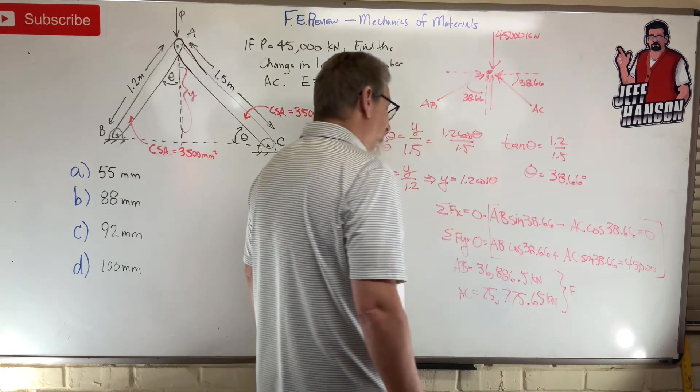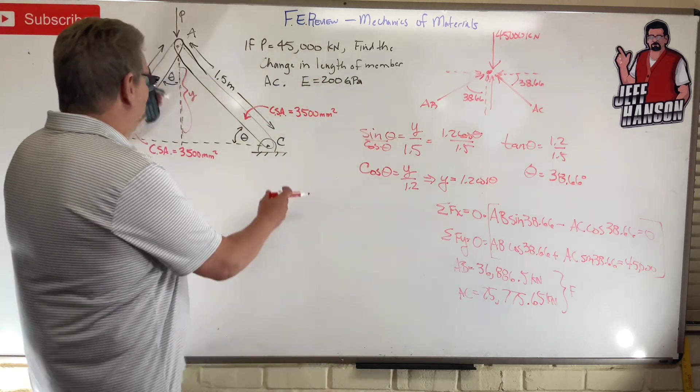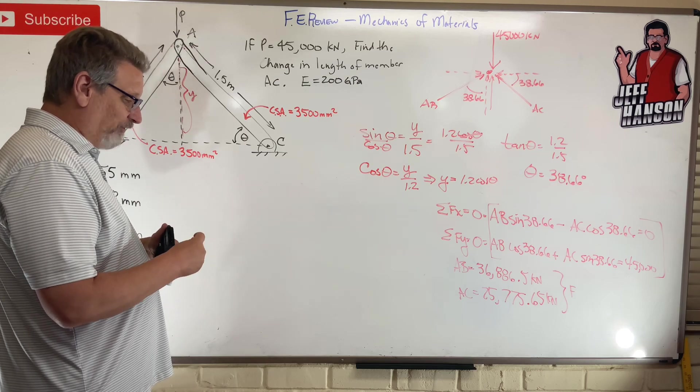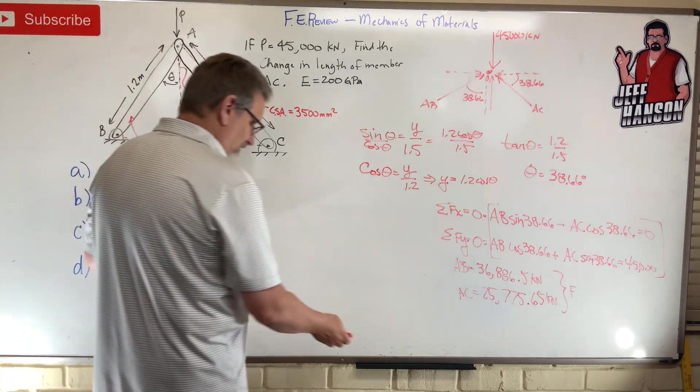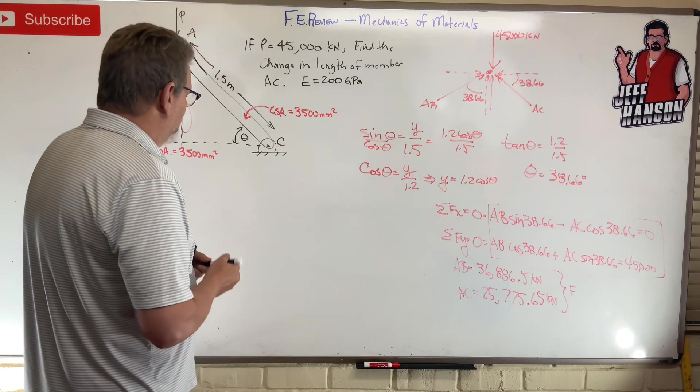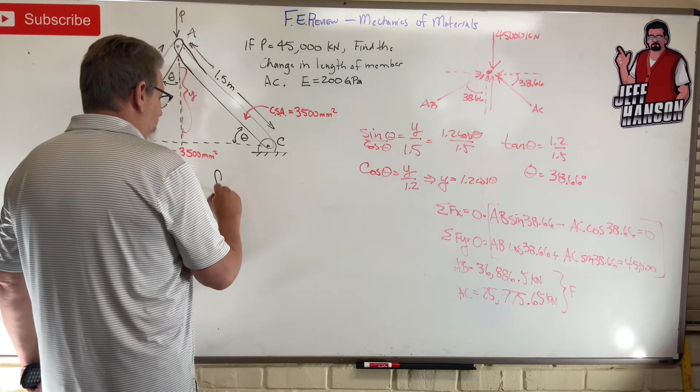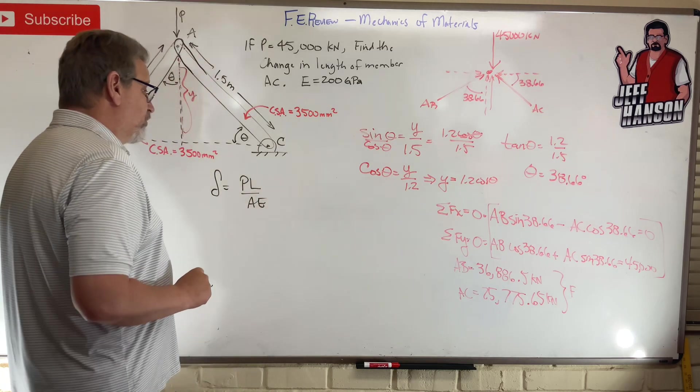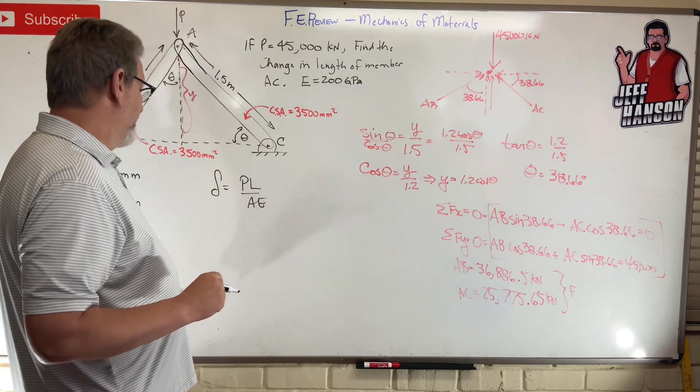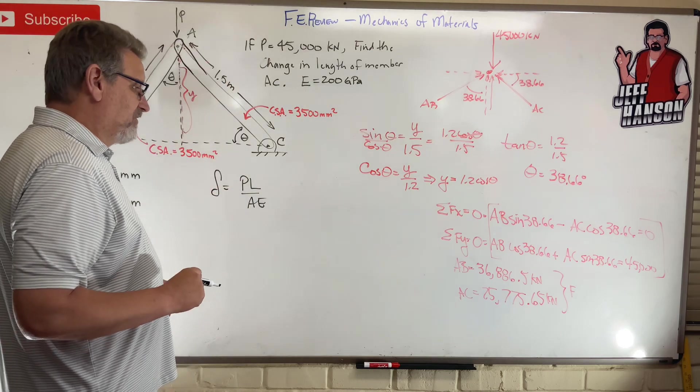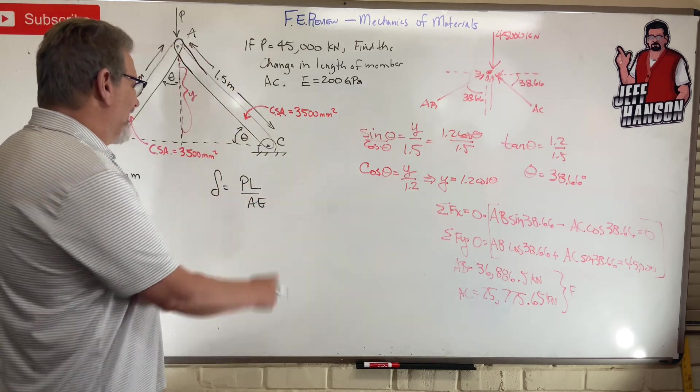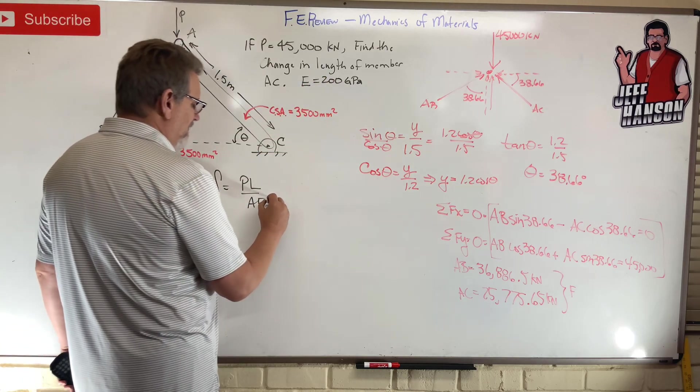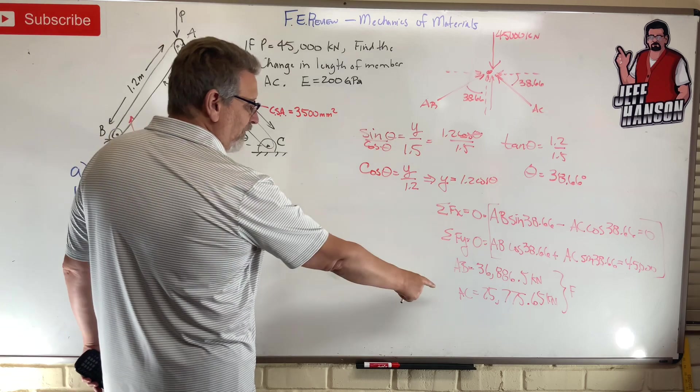Okay, now that these are the forces, that's the force inside of those members, this compressive force here. But we're asked to come up with what is delta, the change in length. So we need an equation for delta. How about this one? Delta equals PL over AE. Because do we know P? Yep, just found it. Do we know L? Yep, right there. Do we know E? Yep, right there. We know everything, don't we?